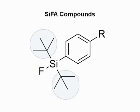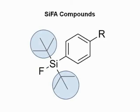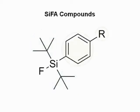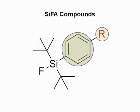The two tertiary butyl groups impart hydrolytic stability to the silicon fluoride bond, which is a critical feature for in vivo applications of SiFA conjugates. Finally, the phenyl moiety serves as a linker between the radionuclide and biologically active molecule, represented in this diagram by R.